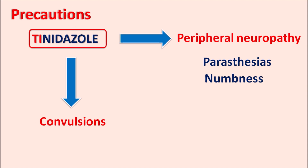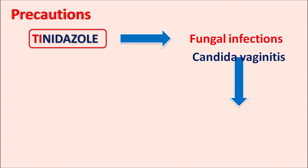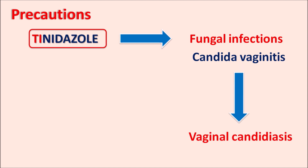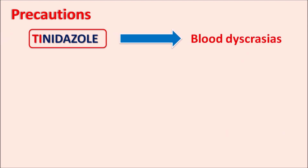Tinidazole can also precipitate convulsive seizures, so it should be used carefully in patients with a history of convulsions. Additionally, tinidazole can increase fungal infections, particularly candida vaginitis at the vagina, resulting in vaginal candidiasis — so while it is useful for bacterial vaginosis, it can worsen fungal infections. Tinidazole can also cause blood dyscrasias and increase the risk of carcinogenesis.